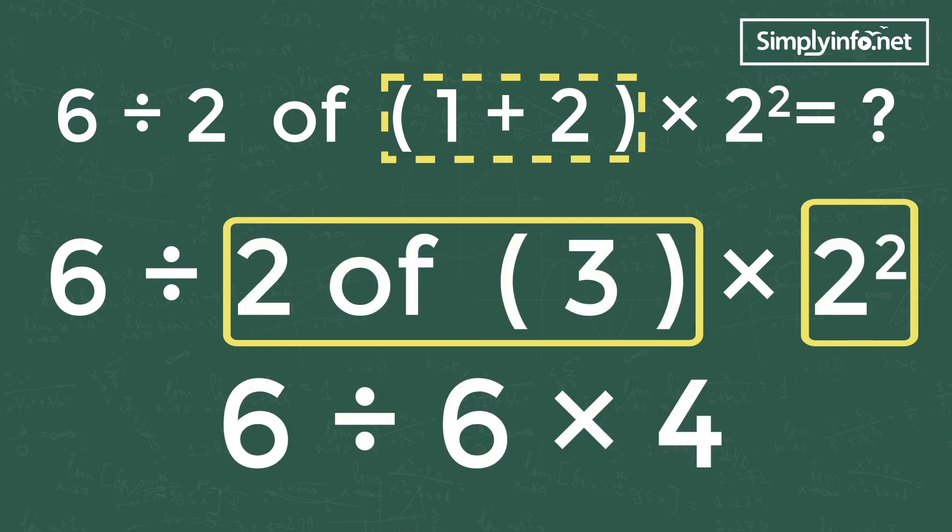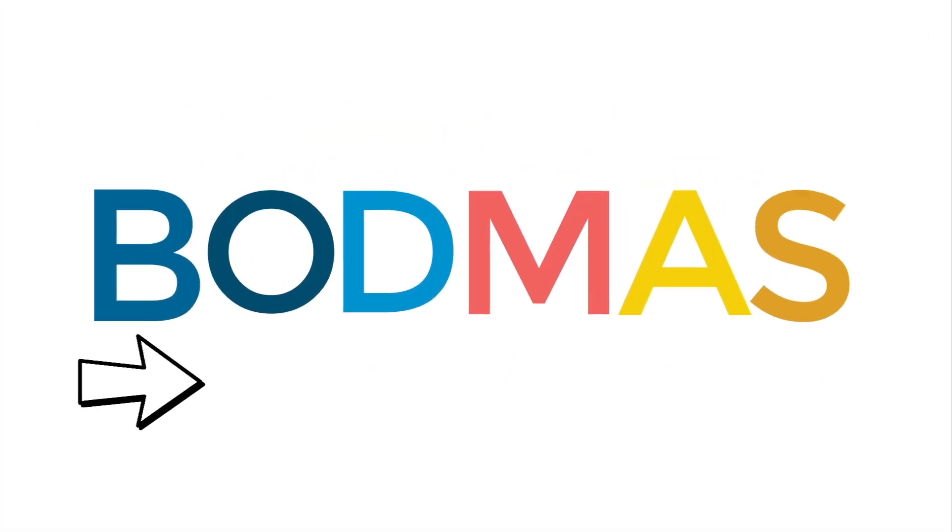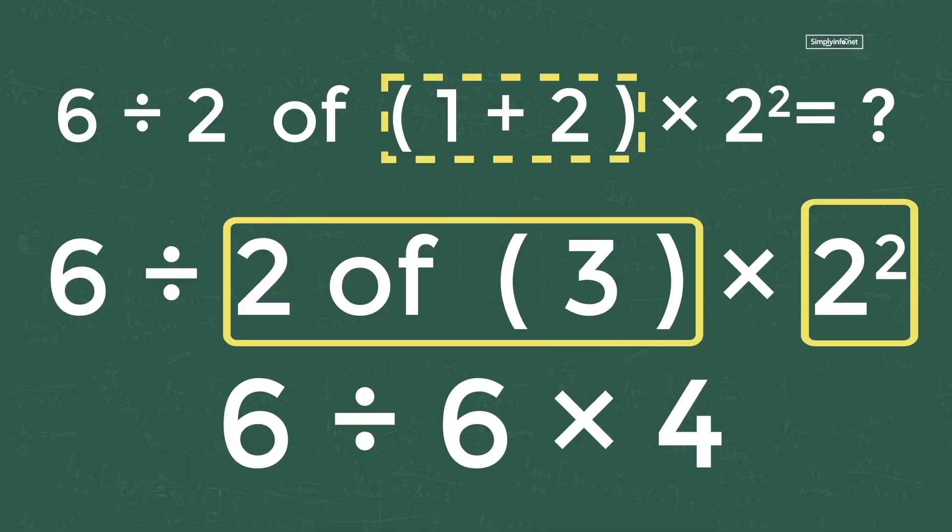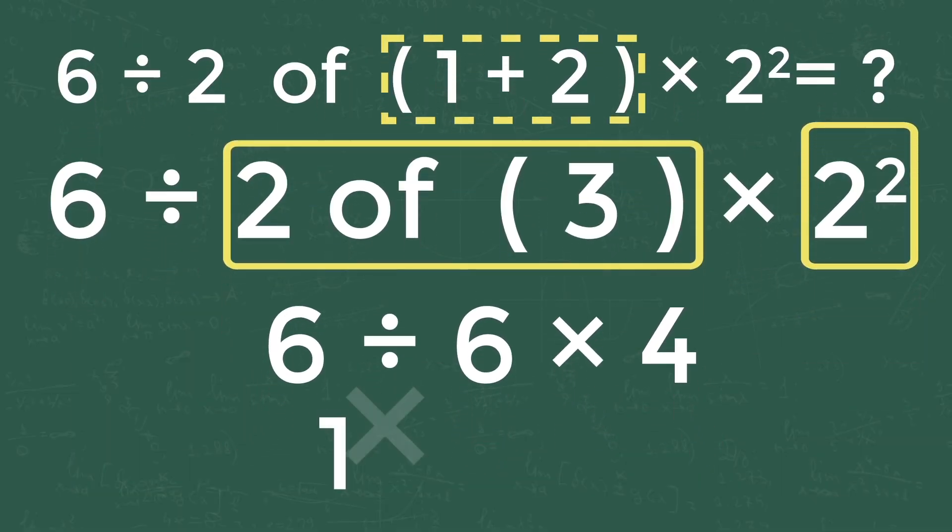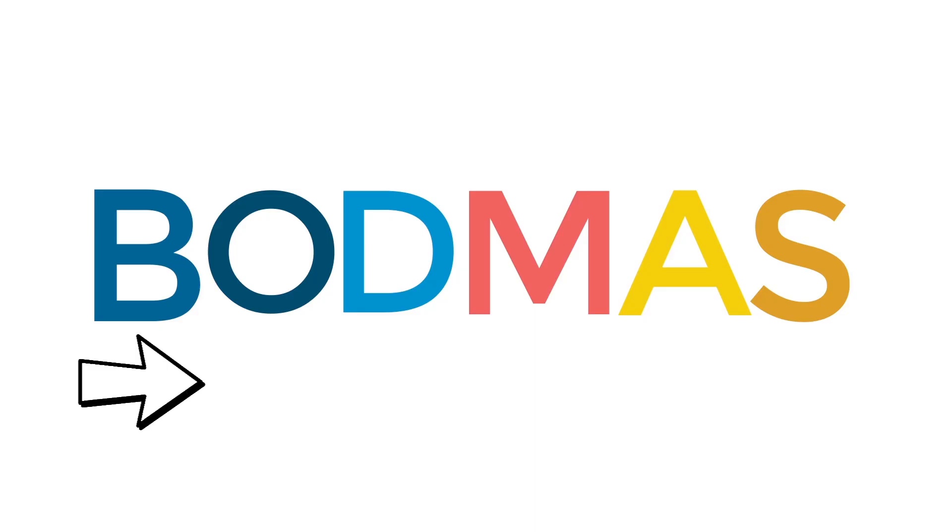6 divided by 6 multiplied by 4. According to BODMAS rules, division comes first and then multiplication. The equation becomes 6 divided by 6 is 1, so 1 multiplied by 4 is 4. So the answer is 4.